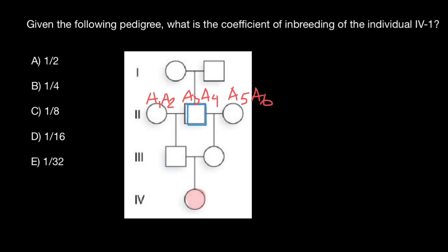Now let's find if IV-1 can inherit two identical alleles from his grandmother here. For example, two A5 alleles. No, he cannot. Because his mother can inherit from her mother only A5 or A6 allele. So there is no way that this person would inherit two A5 alleles or two A6 alleles.